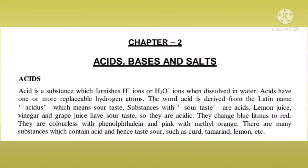If we use an acid on litmus paper — blue litmus paper — it will turn red. This color change in the litmus paper is a key property of acids.